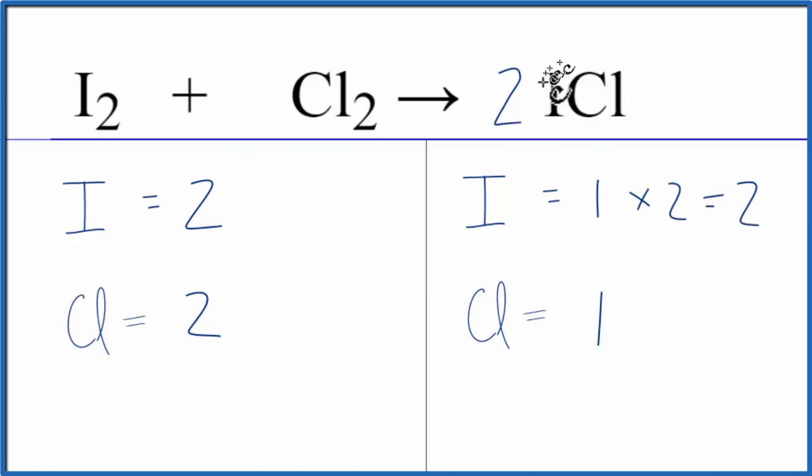And this two, it applies to everything. So the one chlorine here times the two, that gives me two chlorines. And now everything's the same on both sides of the equation, and we're done. This equation is balanced.